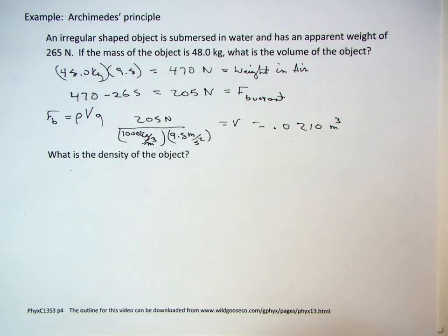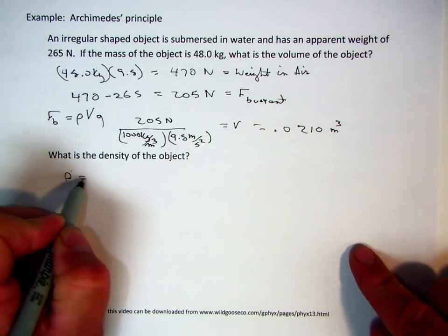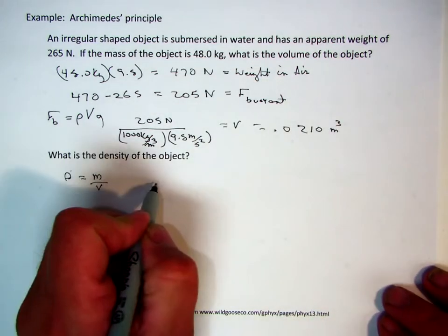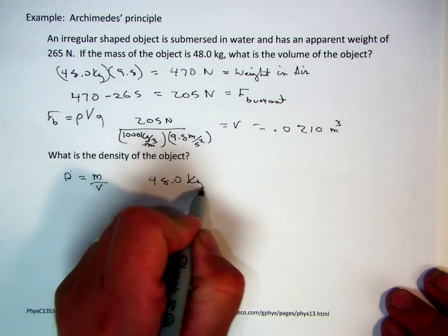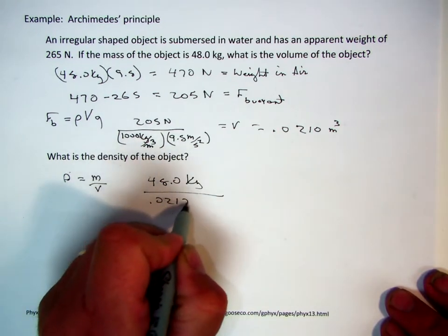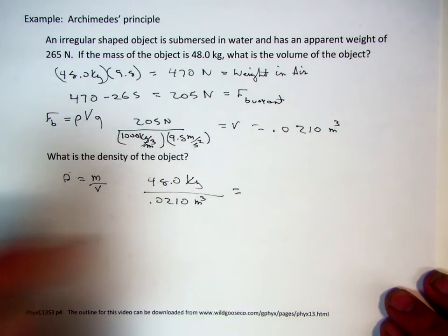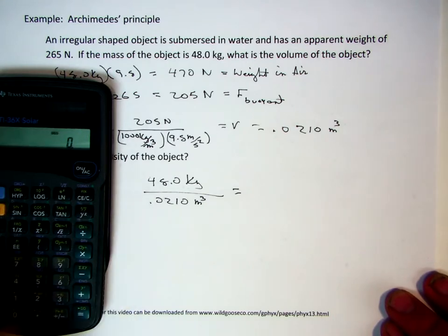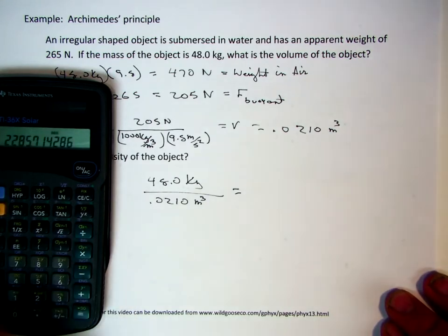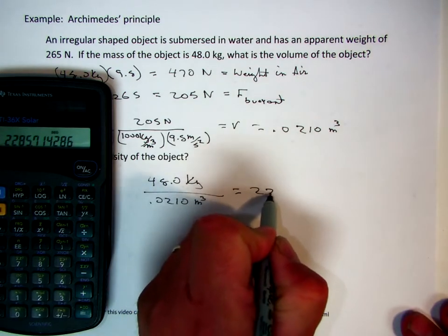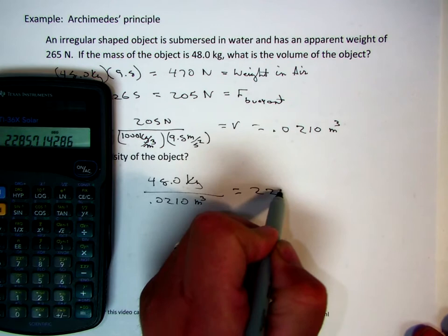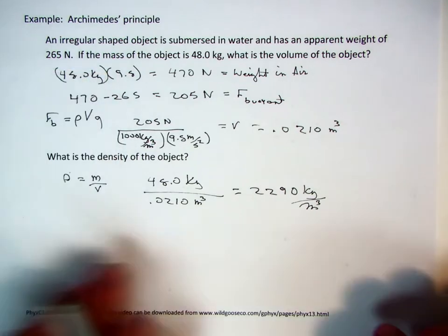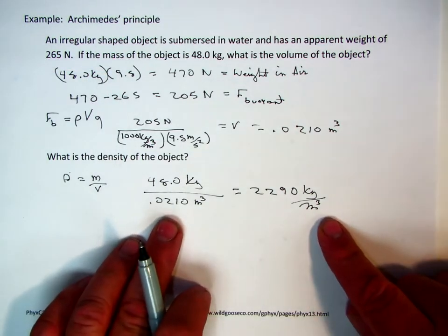So, what is the density of the object? Well, let's go back and see what density was. Density is equal to mass divided by volume. We now know the volume. We now know the mass. The mass is 48.0 kilograms divided by 0.0210 meters cubed. So, 48 divided by 0.021 equals a density of 2,290 kilograms per meter cubed.